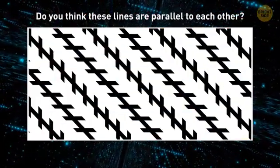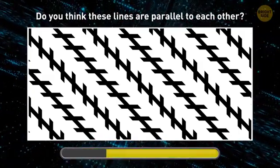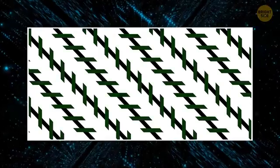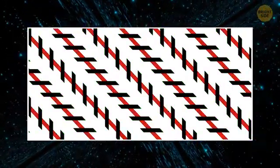Here's another one for you. Do you think these lines are parallel to each other? Yep, they perfectly are. Again, your brain judges them based on their surroundings. All those short intersecting lines make you believe the longer lines are messed up.